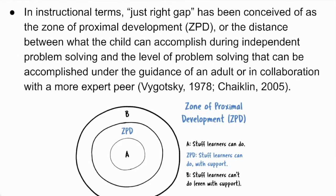The more information we are able to collect about our students, the more accurately we are able to assess what is just the right gap, or the zone of proximal development — the distance between what the student can accomplish during independent problem solving and the level of problem solving that can be accomplished under the guidance of an adult or in collaboration with a more expert peer.